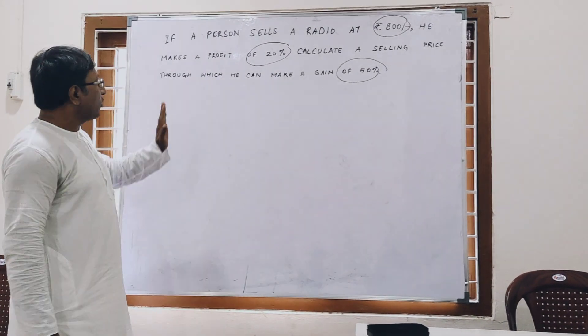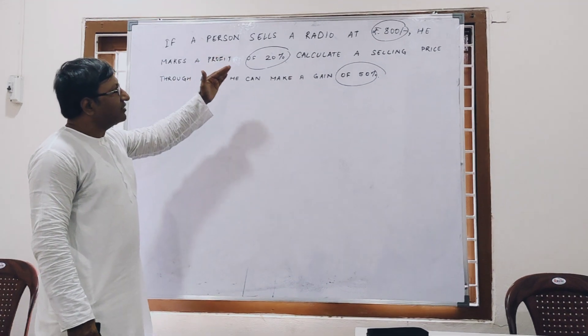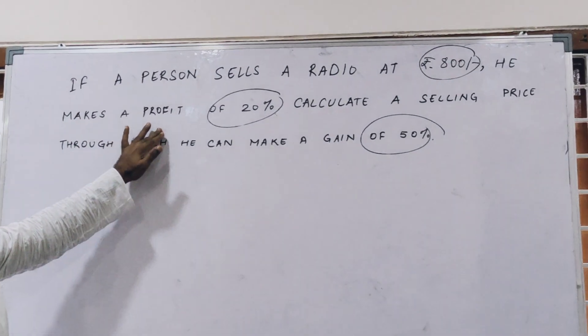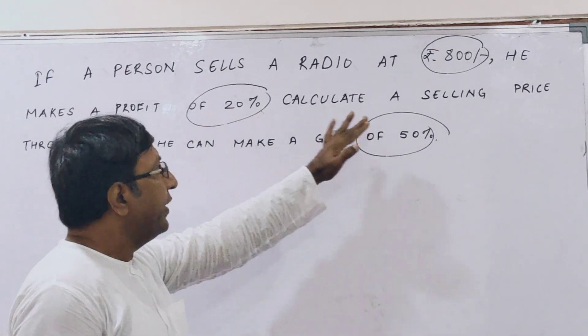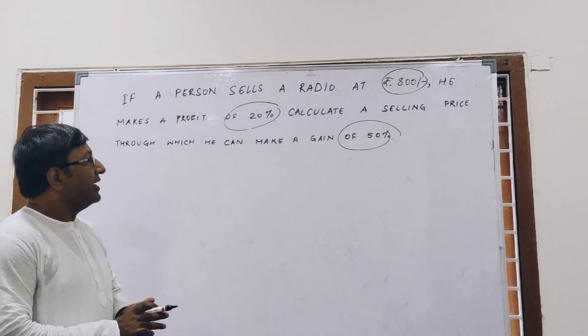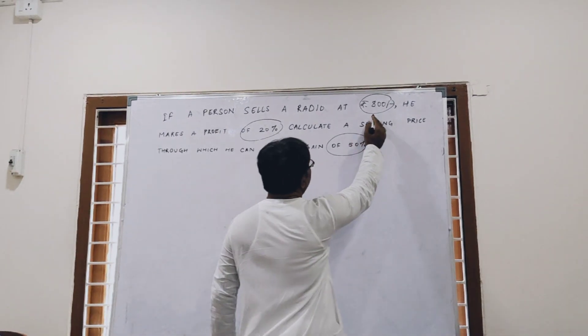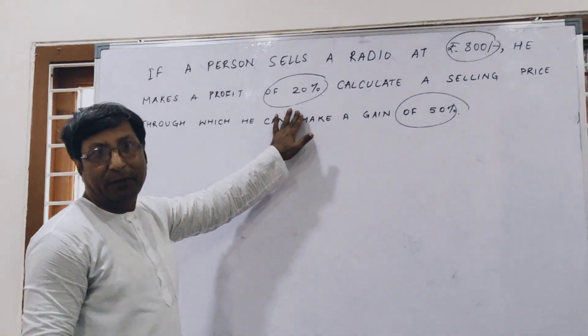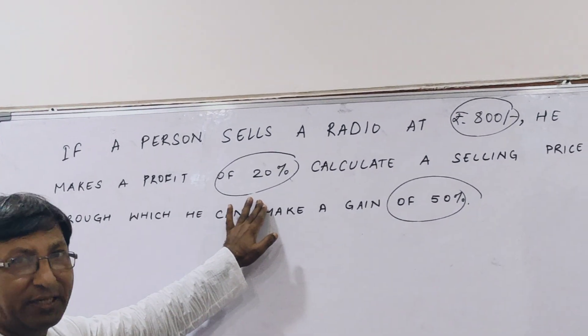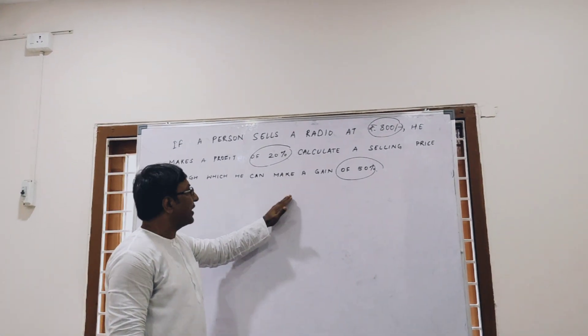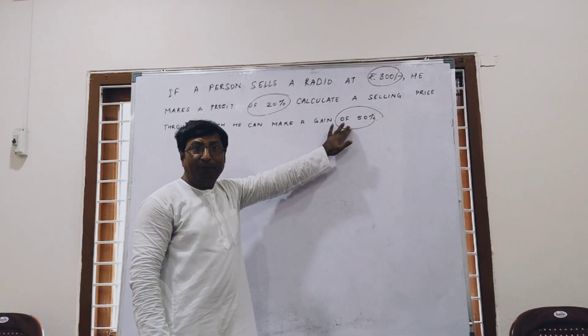You see this question. If a person sells a radio at Rs. 800, he makes a profit of 20%. Calculate a selling price through which he can make a gain of 50%. That means he is selling at Rs. 800, this is the selling price first, and he is getting 20% profit. Now we have to find the second selling price where he wants to get 50% profit.